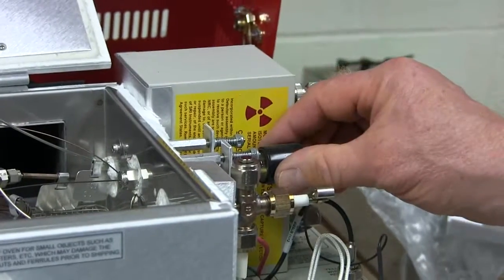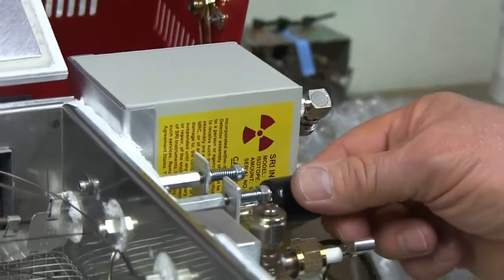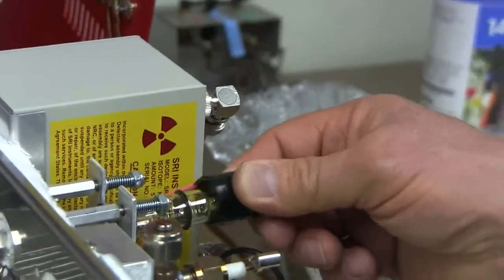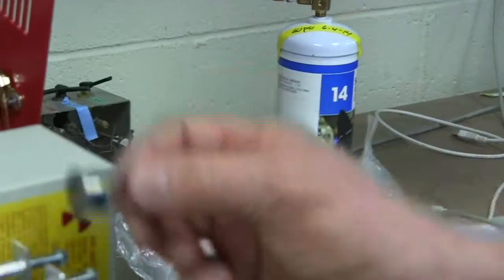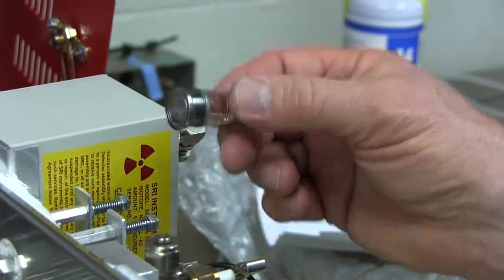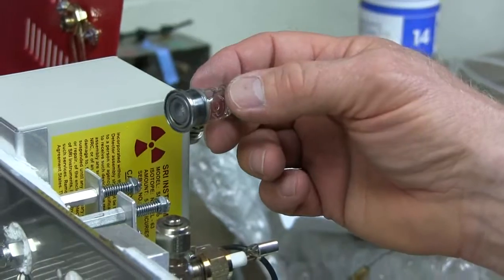This is the photoionization detector, which we abbreviate as PID. This particular detector has a light bulb called a PID lamp, and the light from the PID lamp is what ionizes the molecules and creates the signal.